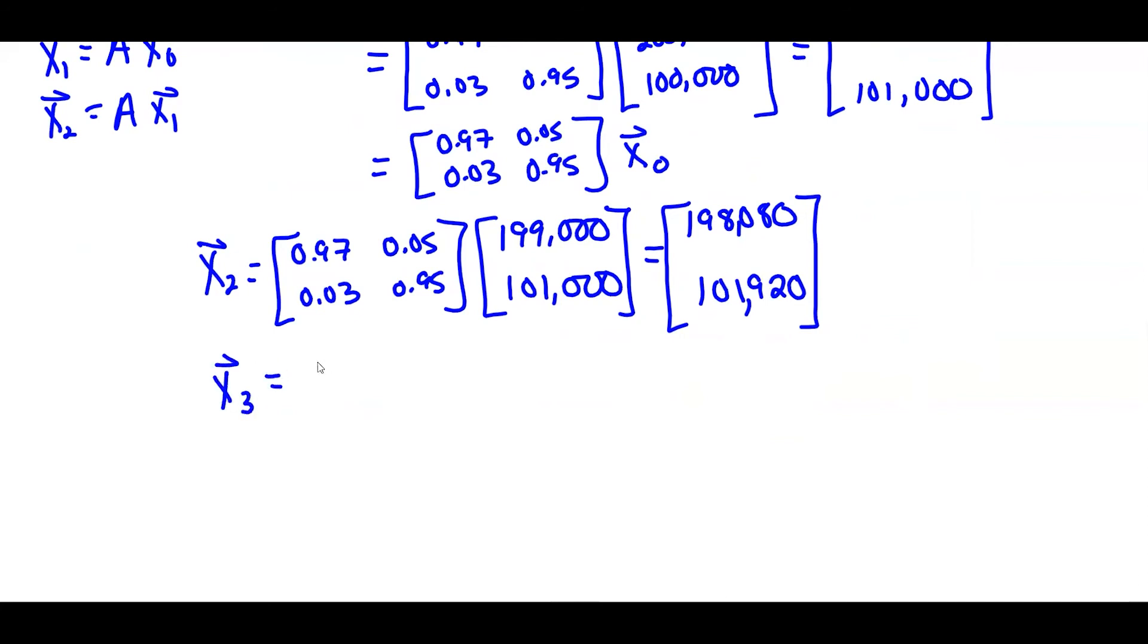So the problem asks for after three years, we're going to do the same thing. Multiply the same matrix times our new population.